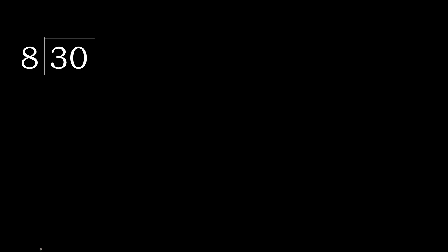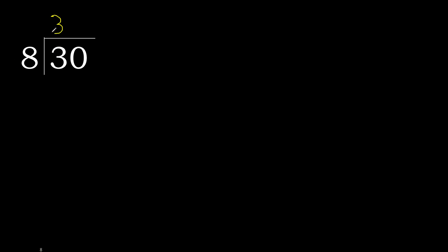30 divided by 8. 3 is less, therefore next. 30 is not less, therefore work with 30. 8 multiplied by which number is nearest to 30 but not greater? 8 multiplied by 4 is greater. 8 multiplied by 3 is 24, which is not greater.